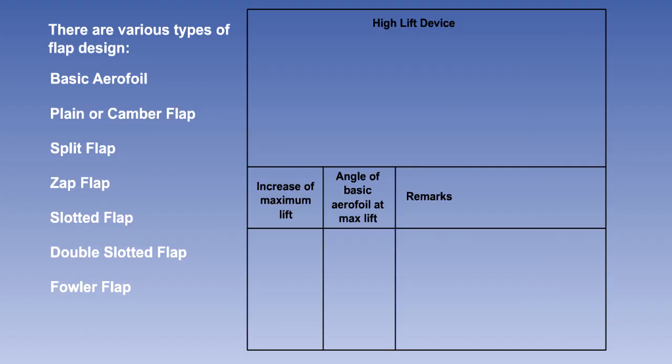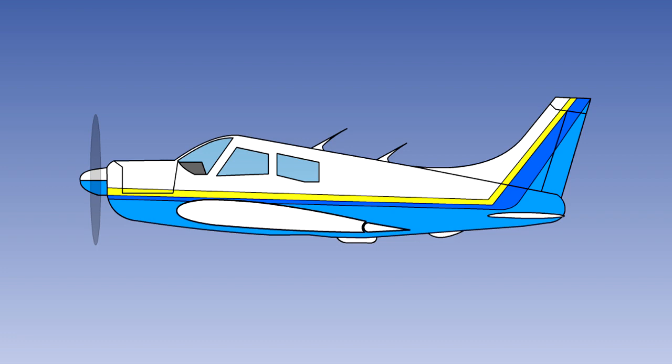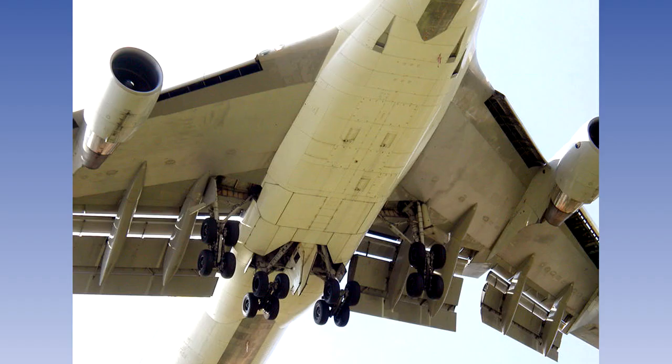Click on a flap type to view its properties and operation. The most popular type for light aircraft is the plain or camber flap, with trailing edge flaps which are a combination of slotted and Fowler flaps widely used on large transport aircraft. This picture shows the triple slotted Fowler flaps on the Boeing 747 in the fully extended landing position.